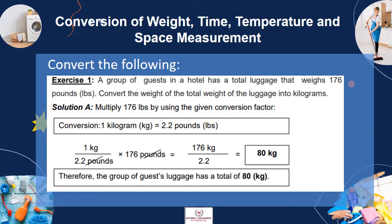Exercise 1: A group of guests in a hotel has a total luggage that weighs 176 pounds. Convert the total weight of the luggage into kilograms. Solution: Multiply 176 using the given conversion factor, where 1 kilogram is equal to 2.2 pounds. So: (1 kg / 2.2) × 176 = 176/2.2 = 80 kilograms. Therefore, the group of guests' luggage has a total of 80 kilograms.